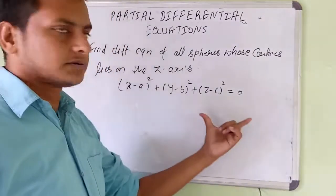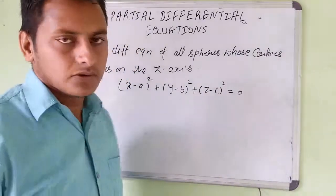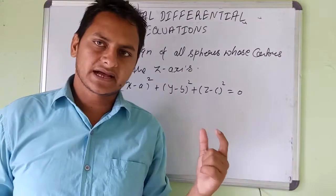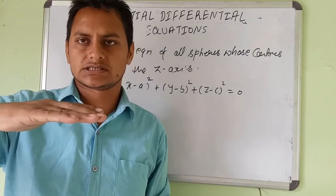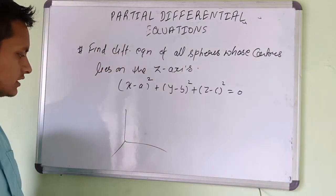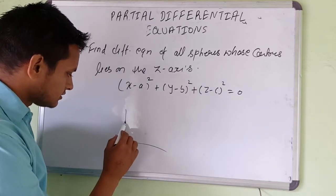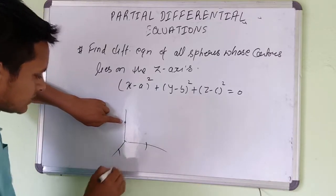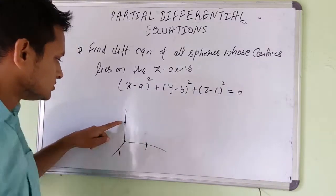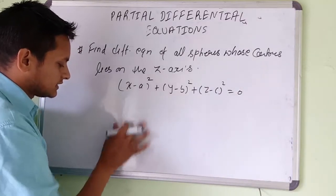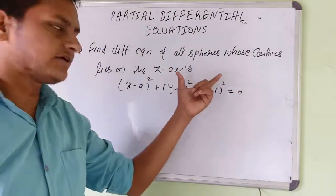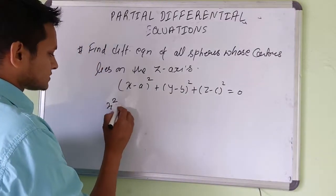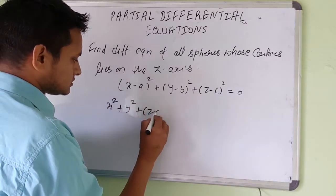The center lies on the z-axis. If the center lies on the z-axis, then the distance from x and y is zero, because on the z-axis the x and y values are zero. Therefore, a = 0 and b = 0. So the equation becomes x² + y² + (z-c)² = 0.